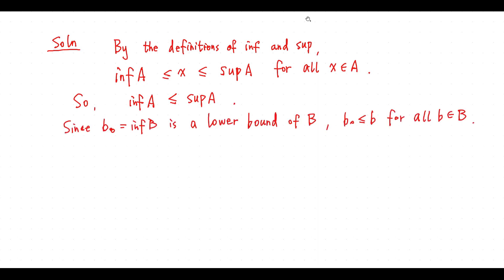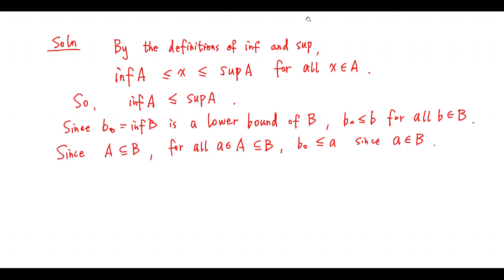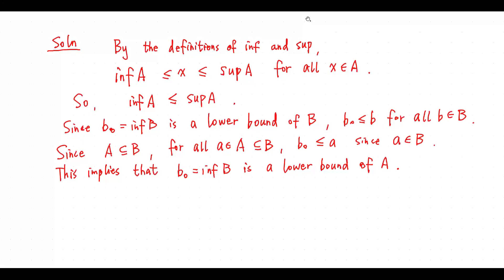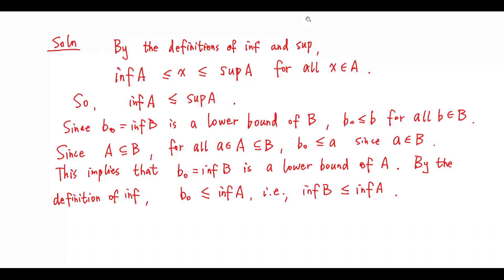Let B₀ equal infimum B. Since B₀ is a lower bound of B, B₀ is less than or equal to b for all elements b in the set B. Since A is contained in B, for all elements a in the set A, B₀ is less than or equal to a. This implies infimum B is a lower bound of A. By definition of infimum, infimum B is less than or equal to infimum A.